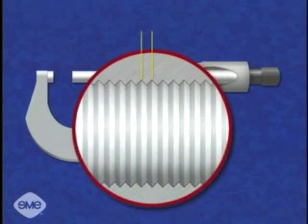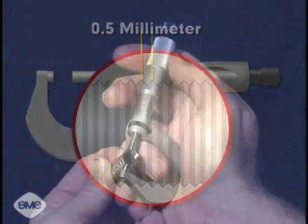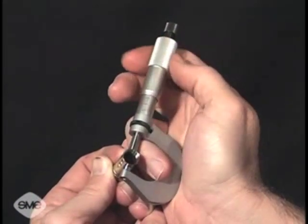The thread pitch is the distance between two adjacent thread crests. In this example, the thread pitch of the micrometer spindle screw is precisely one half millimeter. Each revolution of the thimble moves the micrometer spindle one half millimeter.